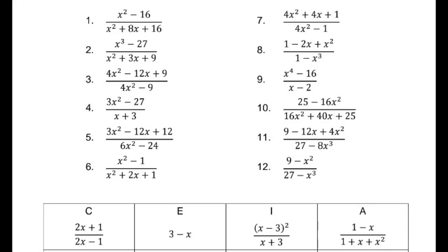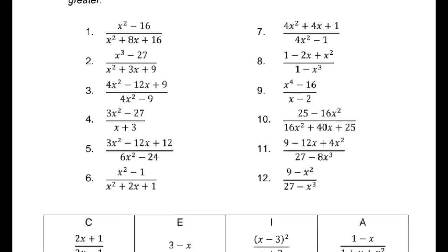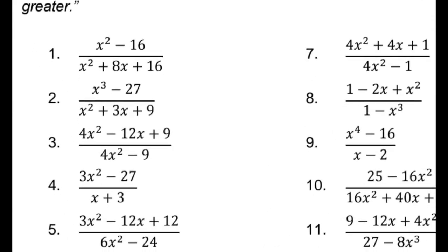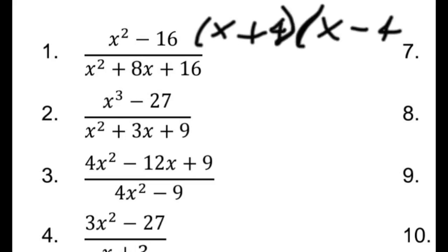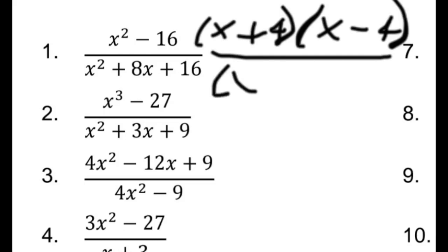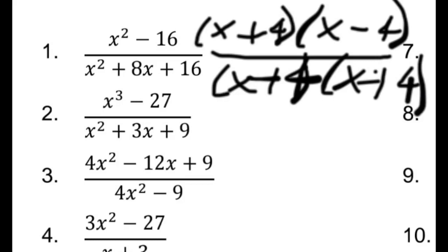Let's have example number 1: x squared minus 16 over x squared plus 8x plus 16. You're going to simplify the numerator and denominator by factoring. x squared minus 16 is a difference of two squares, so we can have that as x plus 4 times x minus 4. Then x squared plus 8x plus 16 is a perfect square trinomial, so we can factor that as x plus 4 times x plus 4. Since there is x plus 4 in both the numerator and denominator, cancel it out. Our answer is x minus 4 over x plus 4.